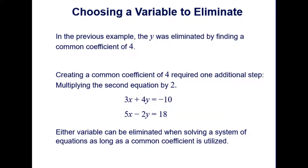In the previous example, the y was eliminated by finding a common coefficient of 4. Creating a common coefficient of 4 required one additional step, multiplying that second equation by 2. So either variable can be eliminated when solving a system of equations as long as a common coefficient is utilized. And that's just all about looking at the two equations and trying to find and create that. You have to make the decision yourself.